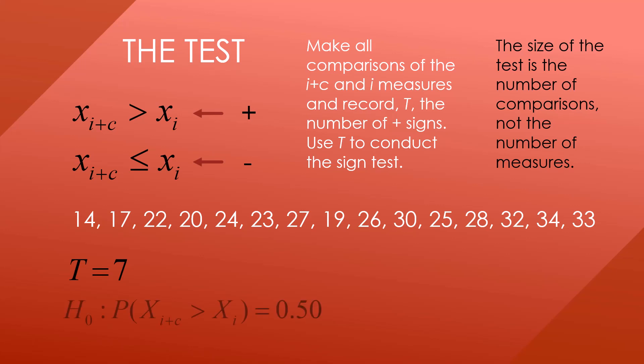The null hypothesis is that the probability that X sub i plus C is greater than X sub i, that is the probability that a later value in time is greater than an earlier value in time, is equal to 0.50. Why 0.50? As we've discussed before, this would indicate that whether or not you go up or down is very much like flipping a coin. It's just by chance.